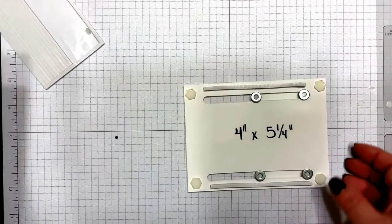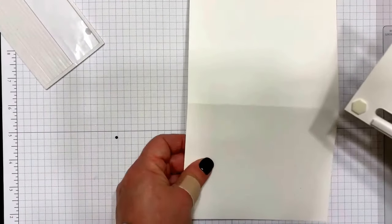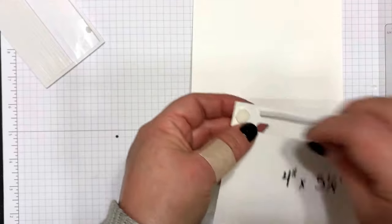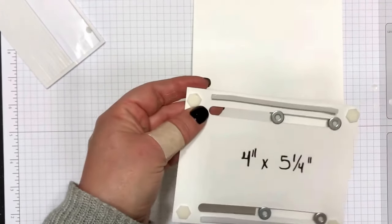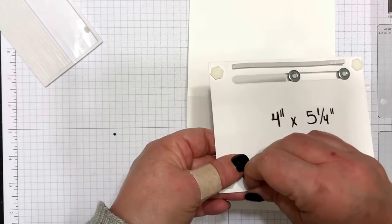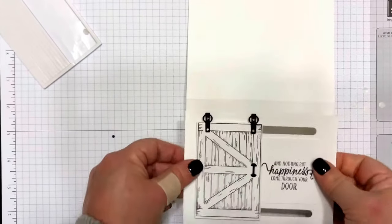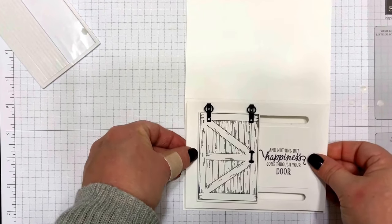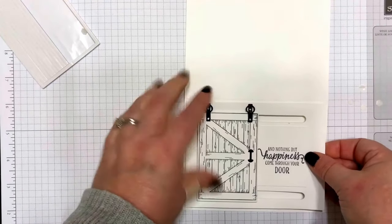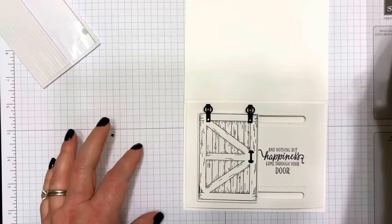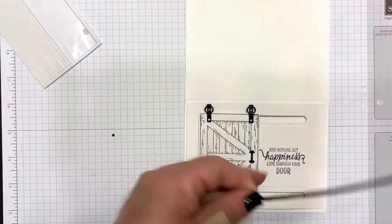So if you're going to do that, make sure that you double up on your paper, and I'll show you an example of that when I'm finished with this card. I'm just going to layer that onto the front of our card there.